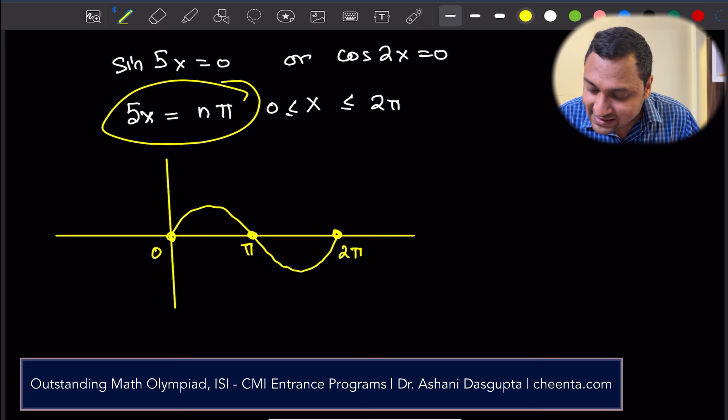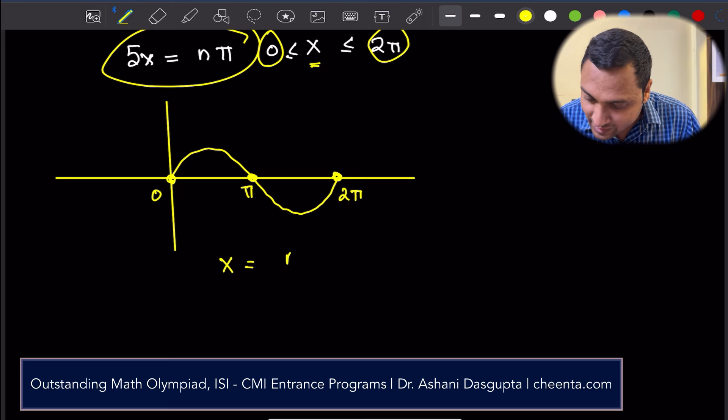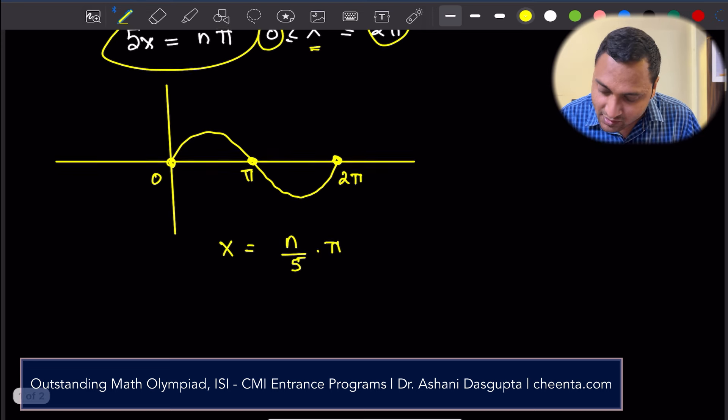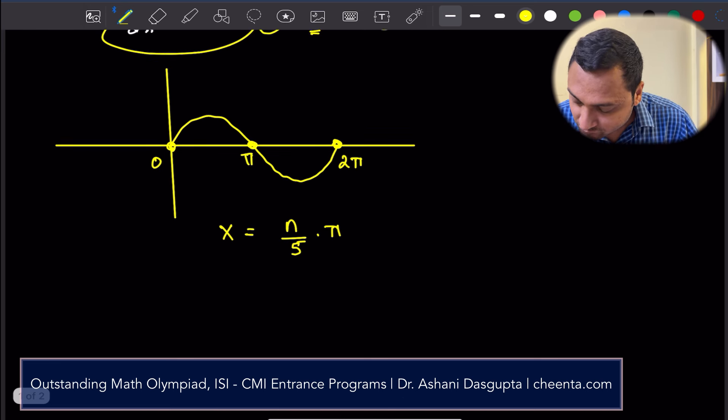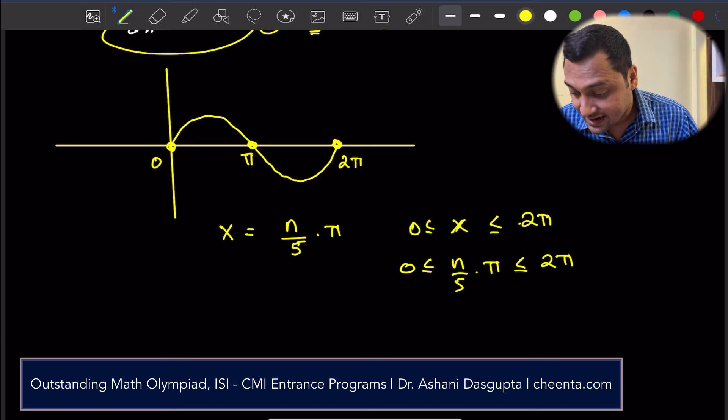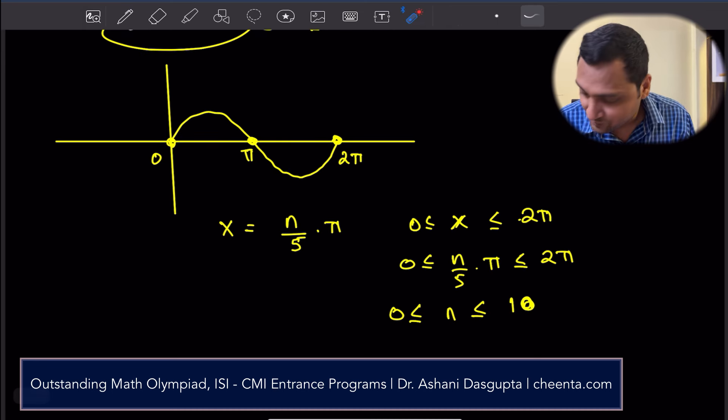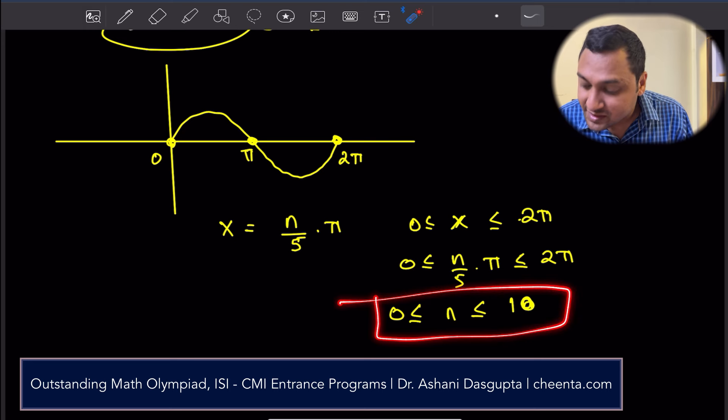We want x between 0 to 2π. x is between 0 to 2π. So for what values of x? x = (n/5)π. So we know that 0 ≤ x ≤ 2π. Or 0 ≤ (n/5)π ≤ 2π. Or we can just cross multiply and get 0 ≤ n ≤ 10. So I just multiplied by 5 on all sides and then I cancel off the π.